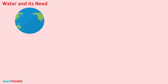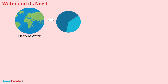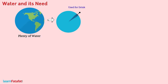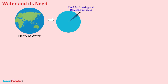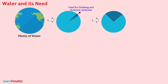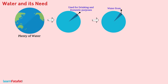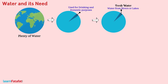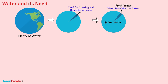But the sad thing to know is, though we have plenty of water, still a very small amount of water can be used for drinking and domestic purposes. This is because only a small portion of water, i.e., water from rivers or lakes, contains fresh water. The rest is all saline water, i.e., salty water.